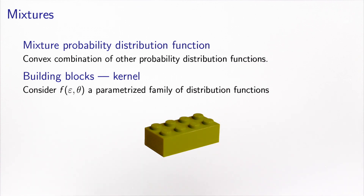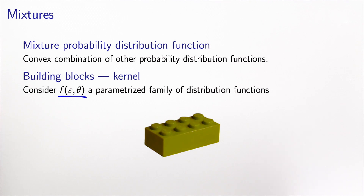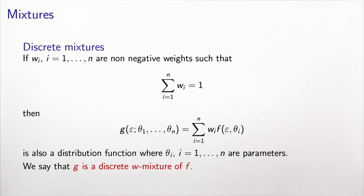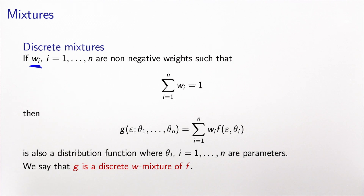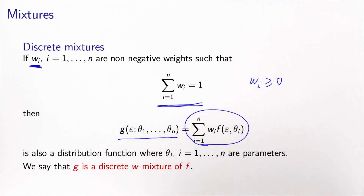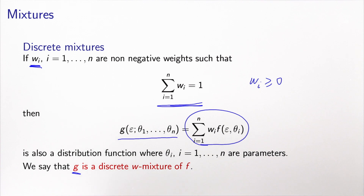Let's consider a family of distribution functions parametrized by a parameter theta, f of epsilon theta, and define what mixtures are. First, I define discrete mixtures, which is the example I used before. To do this, I need to associate a weight or coefficient with each member of the family. Because it must be a convex combination, the sum of the weights must equal one and each weight must be non-negative. Then the probability distribution function defined as the convex combination of the members of the family is a valid distribution function with theta one to theta n as parameters. In terms of terminology, we say that g is a discrete w-mixture of f, where w are the weights used to make the mixture.